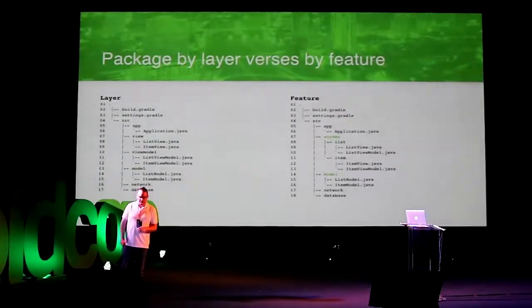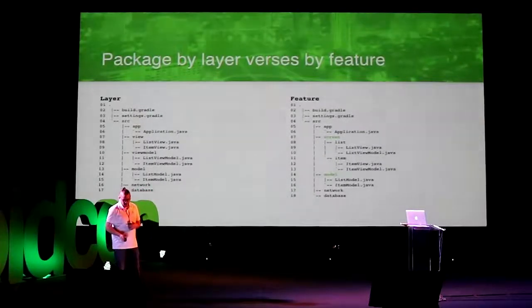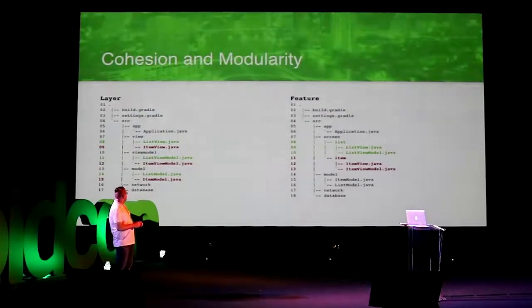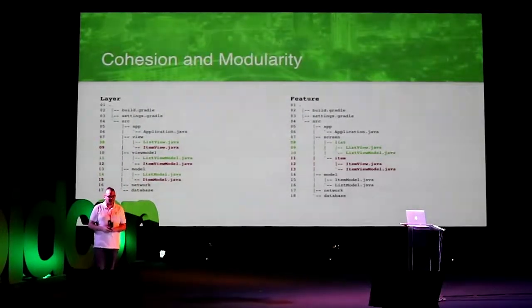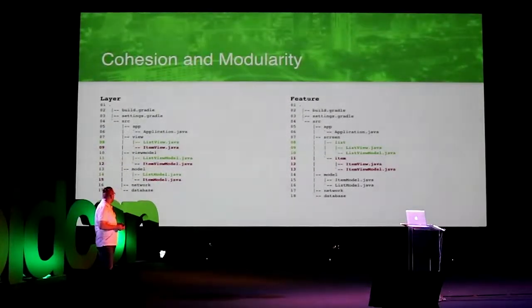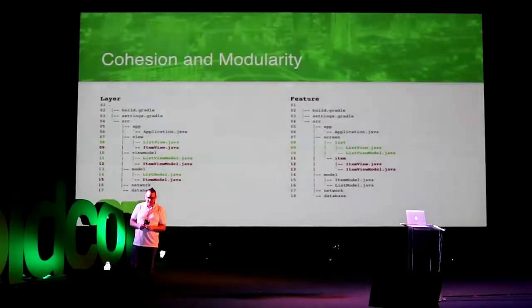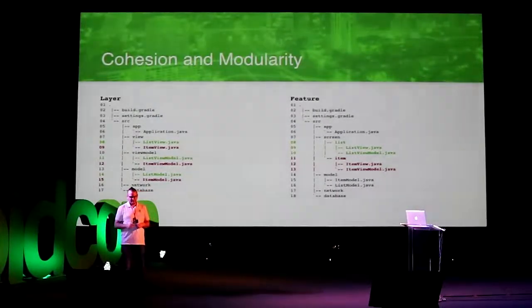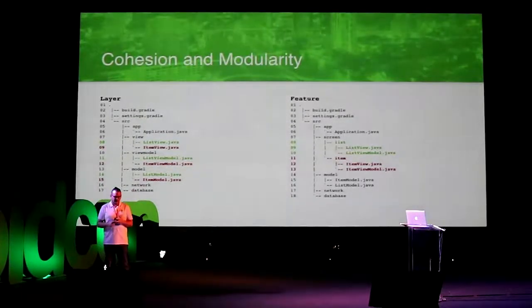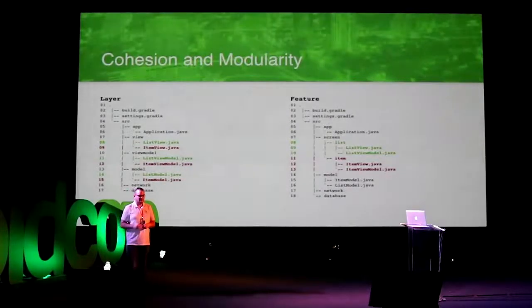In this example I have a 'screen' package that contains the screens of my application — a list and an item. Why should we do this? If one of my developers is going to fix something in the list view, they most likely have to fix something in the view package, in the view model package, and in the model. And if I tell them to delete the list and start from scratch, they have to go into every single package and delete the file.